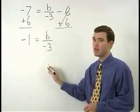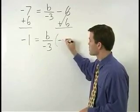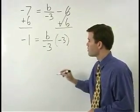To get B by itself, since B is being divided by negative 3, we just multiply both sides of the equation by negative 3.